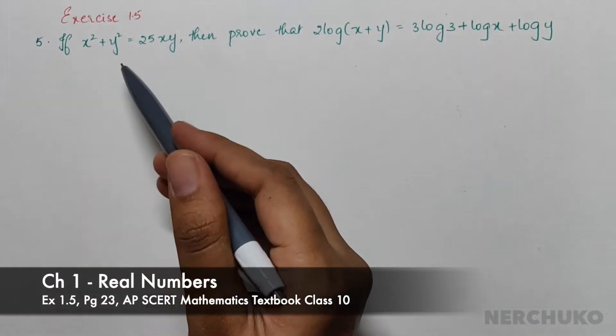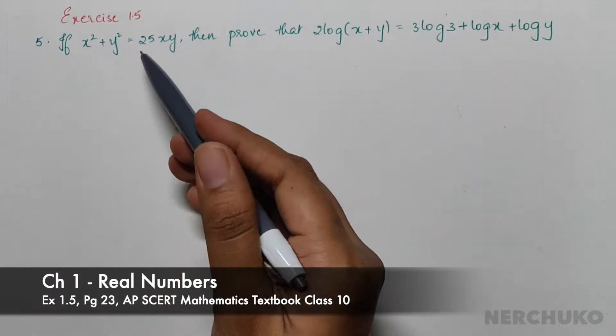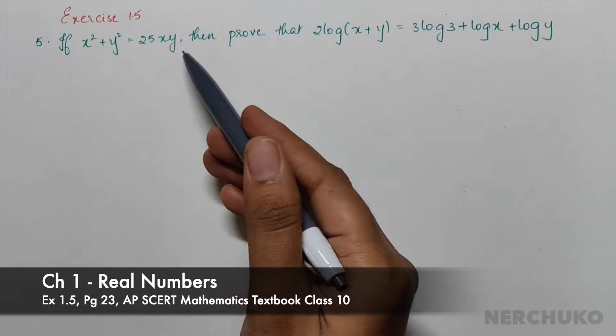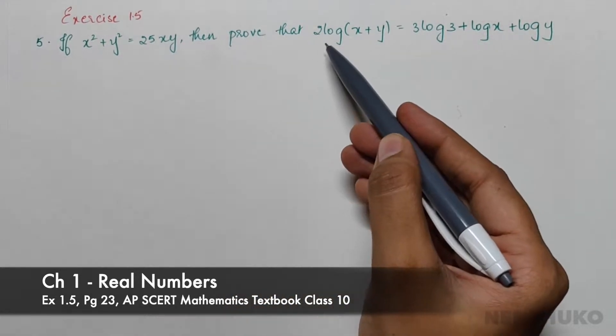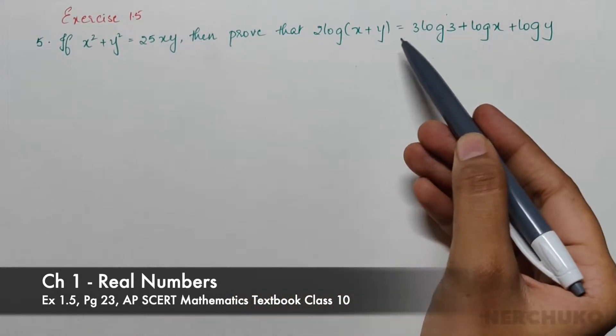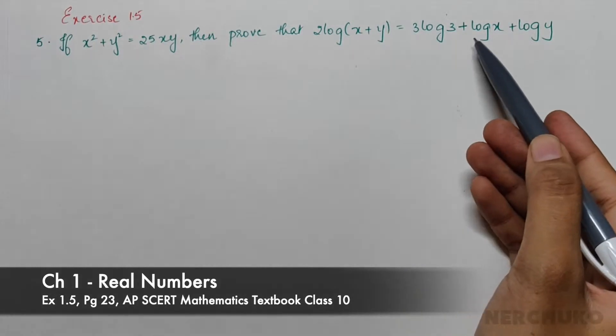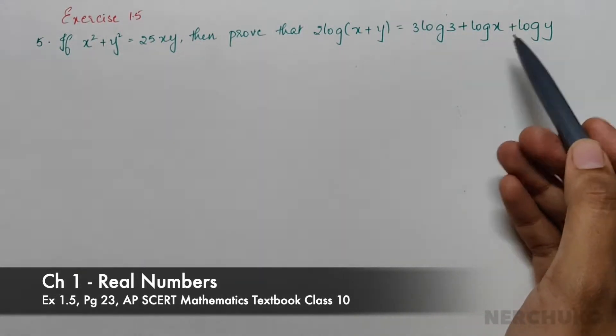For the fifth problem, if x² + y² = 25xy, then prove that 2log(x+y) = 3log3 + logx + logy.